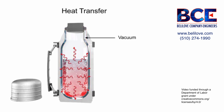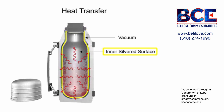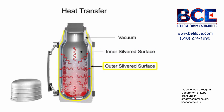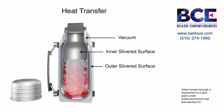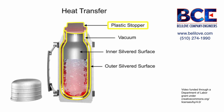Heat loss by radiation is prevented by the silvered walls reflecting radiant energy back into the thermos. Some conduction of heat through the stopper and glass can be expected, but this too is limited because they are made of materials with very low conductivity.